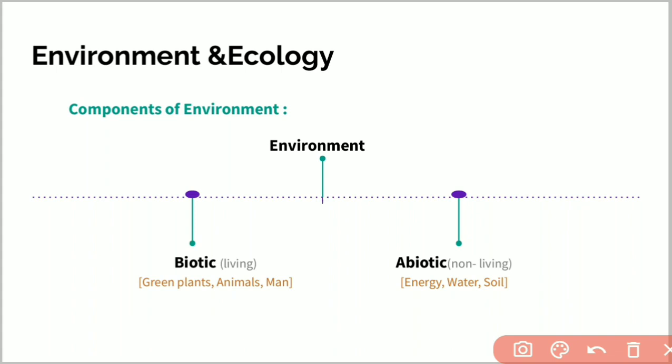The very important one is environment has two important components: one is biotic, another one is abiotic. Biotic is a living component, abiotic is a non-living component.